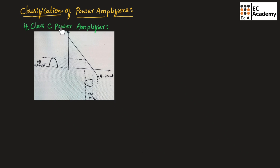Let us understand class C power amplifier. In class C power amplifier, the transistor is biased below the cutoff region, so the Q point will be present below the cutoff region. Hence, only a part of the input signal is represented at the output.